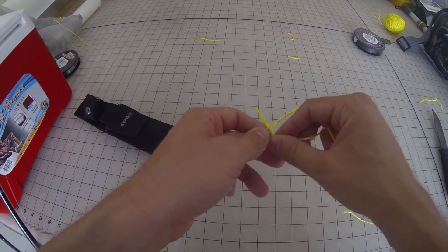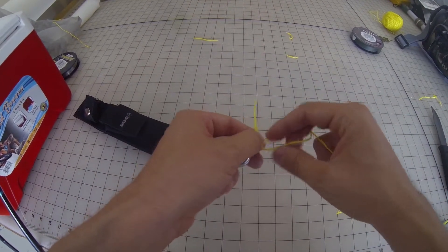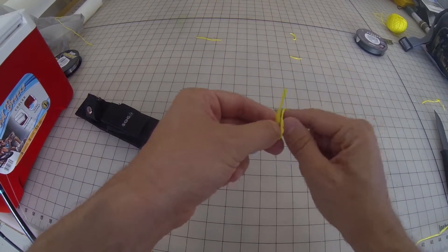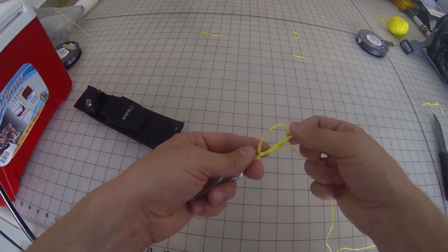Pass that tag end back through that original loop and then for the improved part of the clinch knot, I'm going to pass that through that second loop that I just made.